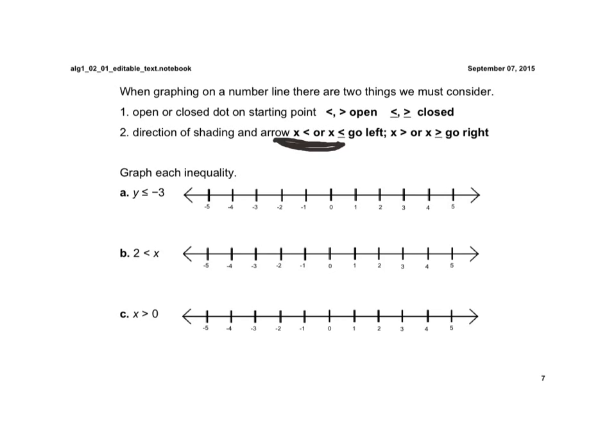So for this first one, y is less than or equal to negative 3. Since it's equal to, I'm going to put a closed dot at negative 3. And it's less than, so it's to the left.